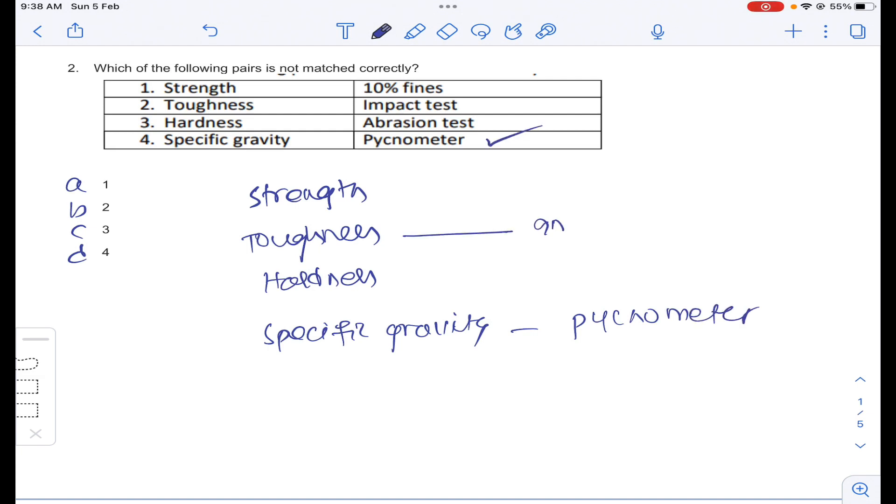Toughness is measured with impact test, so it is matched correctly. Hardness is measured with crushing test on the aggregates, not with abrasion test. This is wrong. Strength will be measured with 10% fines. When 10% fines are more, strength is more. It is also matched correctly. Answer C for question number 2.